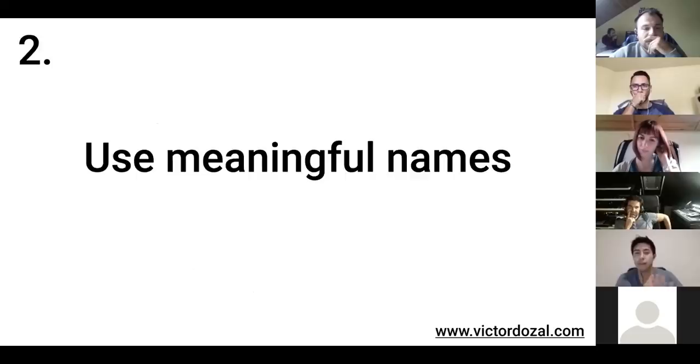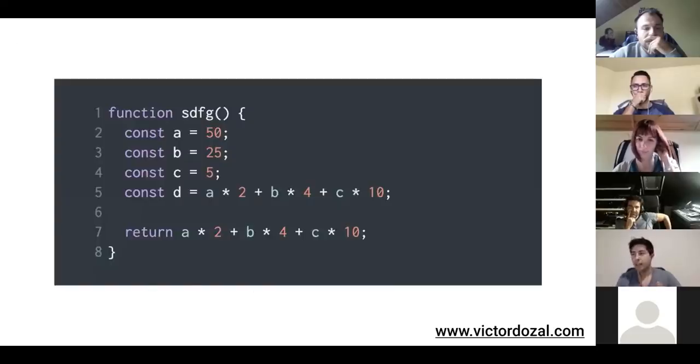Number two, use meaningful names. So here's a little snippet of code. I would like one of the non-technical, even one of the technical people to try to tell me what this formula is doing. And I don't want you to tell me it's multiplying and adding things. Just tell me, is this the formula for string theory? Is this a formula for how to measure the heat that comes out of a computer? Does anyone have a clue?